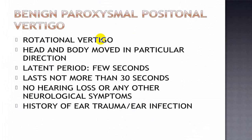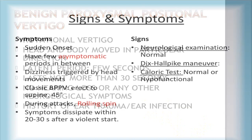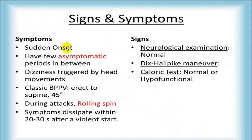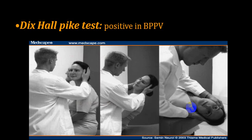BPPV: person has rotational vertigo in a particular direction lasting only a few seconds — not more than 30 seconds — with no hearing loss and no other neurological symptoms or signs. There may be a history of prior trauma or ear infection. Confirmed by the Dix-Hallpike maneuver. Classical BPPV: in the supine position at 45 degrees, the person complains of rolling brain spin lasting 20-30 seconds. Neurological examination is normal; Dix-Hallpike maneuver will prove it; caloric test will be normal.